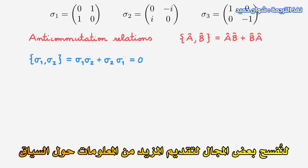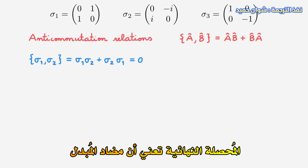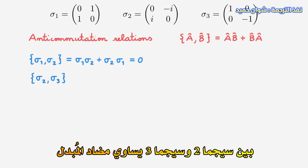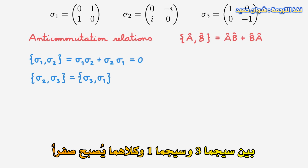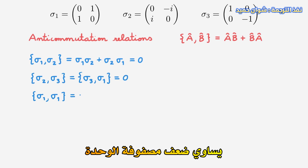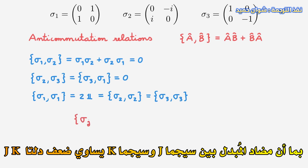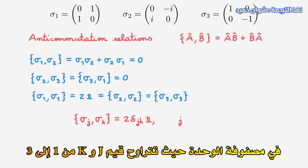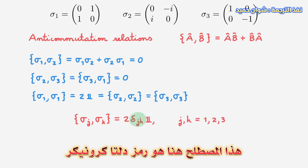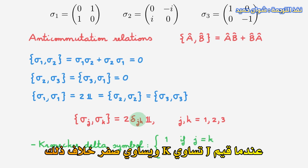We could repeat this exercise for all other possible pairs of Pauli matrices. The anti-commutator between sigma-2 and sigma-3 is equal to the anti-commutator between sigma-3 and sigma-1, and both vanish. By contrast, the anti-commutator between sigma-1 with itself is equal to 2 times the identity matrix, and so are the anti-commutators of sigma-2 with itself and of sigma-3 with itself. We can summarize these expressions as the anti-commutator of sigma-j and sigma-k being equal to 2 times delta-jk times the identity matrix, where j and k run from 1 to 3. The Kronecker delta symbol equals 1 when j equals k and 0 otherwise.